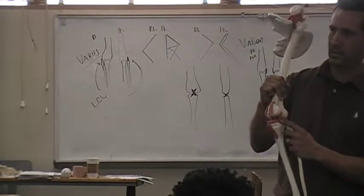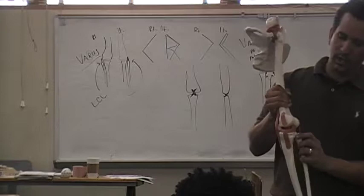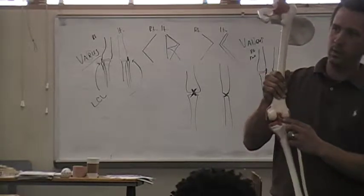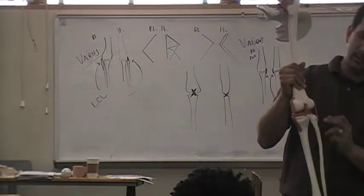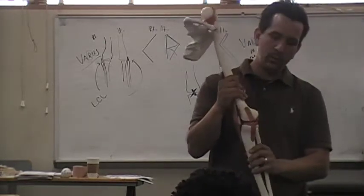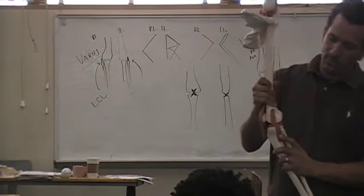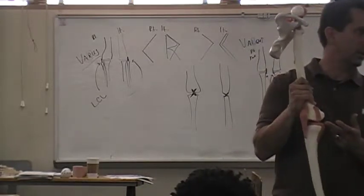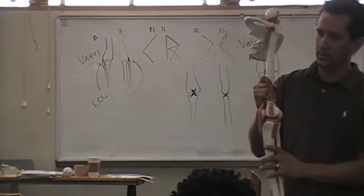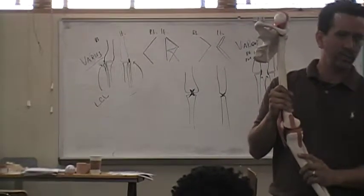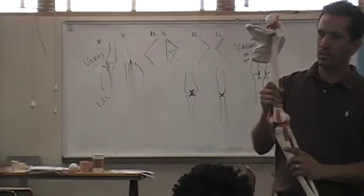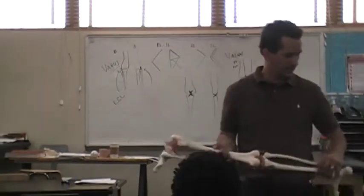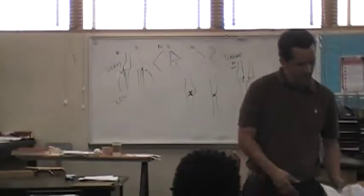So we have grade two of the PCL. Grade one would be where most of the ligament is intact. Then we have a grade three rupture or tear of the MCL, where the ligament is completely torn — that is a grade three MCL tear. That shows you all three grades of ligament tears.